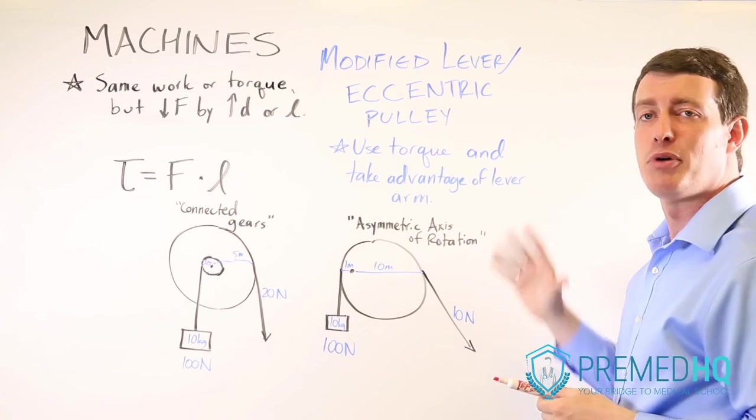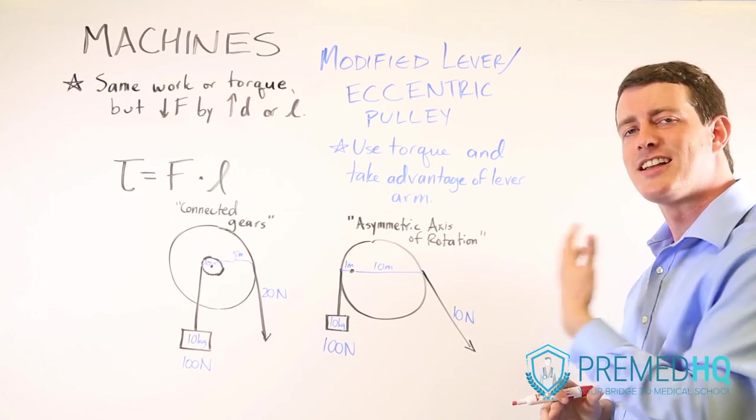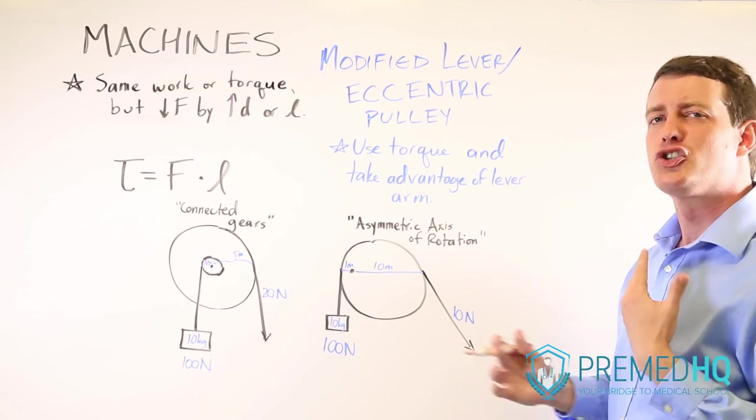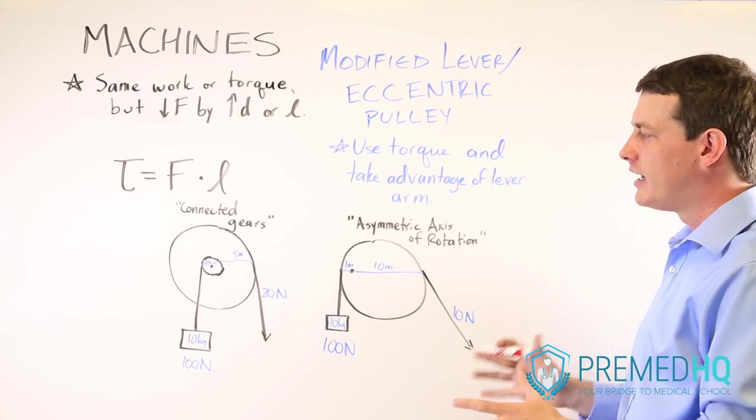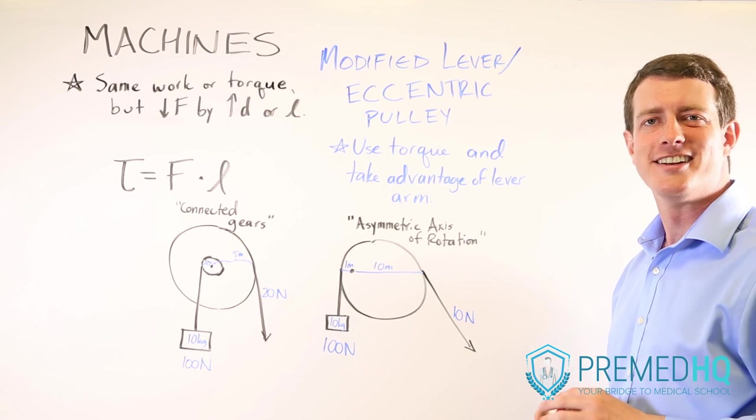And that's called an eccentric pulley. And be aware of this because they like to bring this up on the MCAT and trick you into thinking you're working with a pulley. But in fact, because of the difference in lever arms, you're actually working with a lever there.